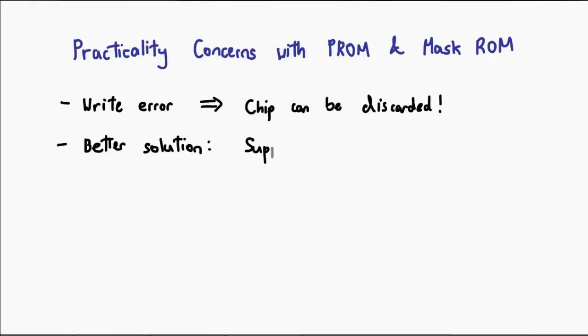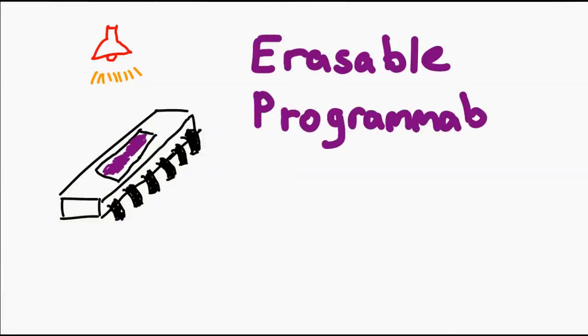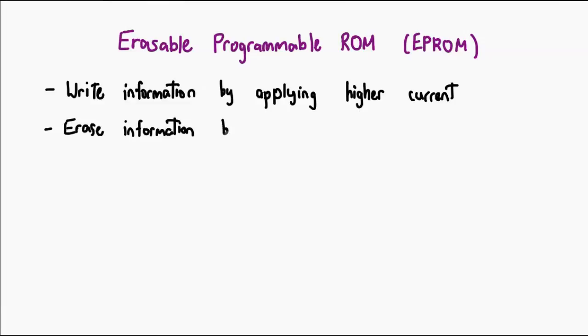So for a more practical use case, we might want to consider erasure, the ability to undo some of the changes that were made. And that is where we have the more advanced types of memory. For example, EPROM. EPROM stands for Erasable Programmable ROM. And now, what we can do is, after encoding, we can actually go through a process of erasing the contents. EPROMs are interesting because they are a little like PROMs and a little like mask ROMs. You see, you actually write to an EPROM by using a higher current. To erase from this chip, you need to actually expose it to UV light.